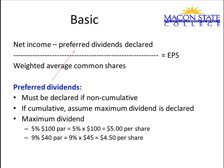even if nothing is declared, you assume that the maximum dividend is declared and remove it from the numerator. Remember that the maximum dividend is computed as the percent times the par — 5% times the $100 par — so that particular dividend would be $5 per share maximum. If cumulative, you would then multiply that times the number of preferred shares and subtract it from net income.